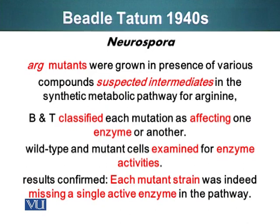Mutants that required arginine in addition to minimal media to grow were called arg mutants. They observed different versions of arg mutants in their specimens. They realized that if arginine was the missing compound, precursors to arginine might also rescue these mutants. Each mutation was classified as affecting one enzyme in the metabolic pathway for arginine production. Wild-type and mutant cells were examined for enzyme activities using biochemical assays, confirming each mutant strain was missing a single active enzyme in the arginine biosynthetic pathway.